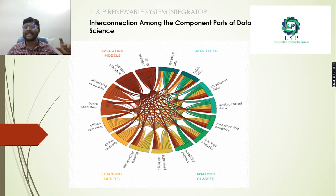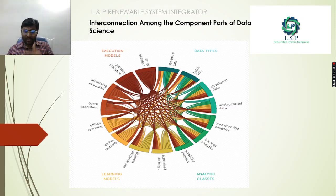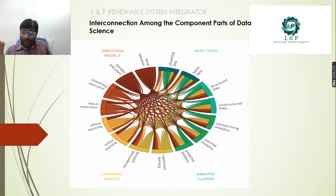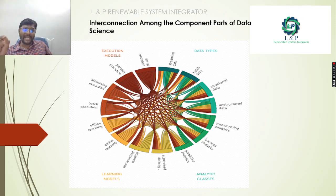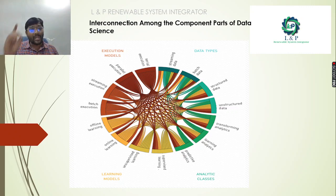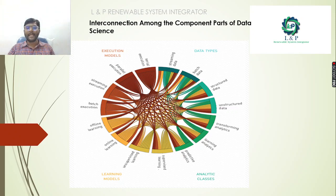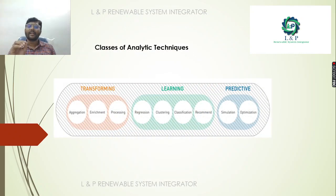There are many interconnections among execution models, data types, learning models, and analytical classes. Inside learning models we have offline learning, online learning, unsupervised learning, and supervised learning. In analytical classes we have predictive analytics, learning analytics, and transforming analytics. For data types we have unstructured data, structured data, batch data, and streaming data. Inside execution models we have serial execution, parallel execution, streaming execution, and batch execution. All these models have interconnections.